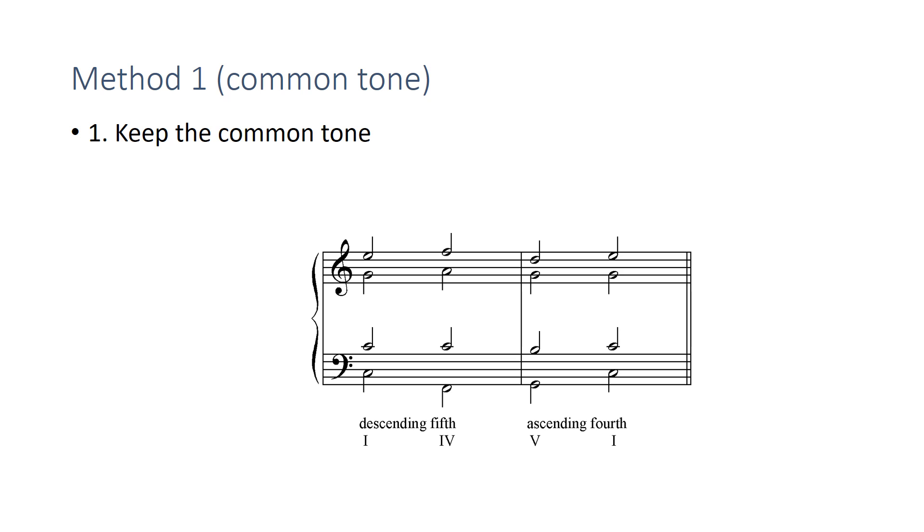And if I move from G to C, which is an ascending fourth, then I'm looking for a common tone between G and C. The common tone is the G, and you can see it being kept there. So there's a common tone being kept in the tenor from that progression. And here's a common tone being kept in the ascending fourth progression. So that's the first step, keep the common tone.